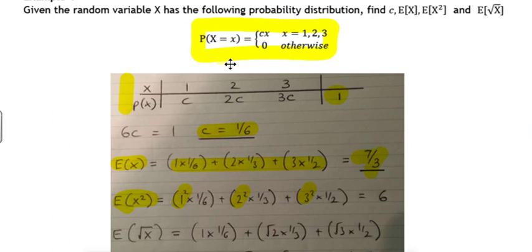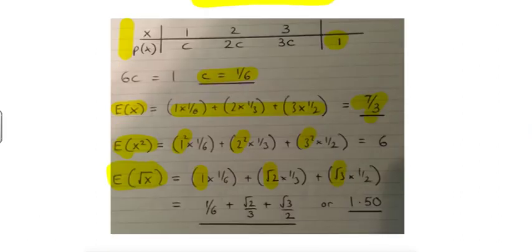Now when it comes to the expected value of the square root of x, we can work out the expected value of any function of x by doing that function of x times the probability. So the square root of x is 1, the square root of 2 is root 2, the square root of 3 is root 3. We can work out the value of the function and then multiply it by the probability. This gives us in exact form 1 sixth plus root 2 over 3 plus root 3 over 2, or as a decimal rounded to 3 sig figs 1.50.